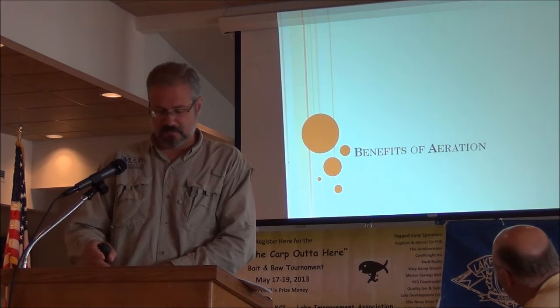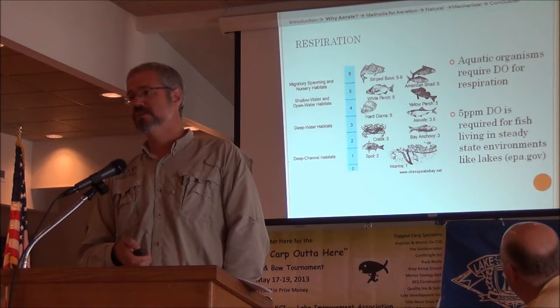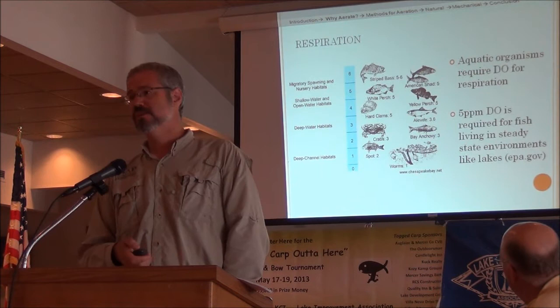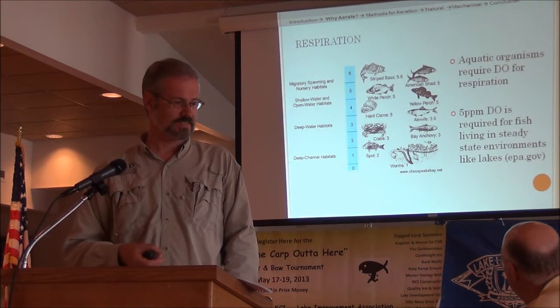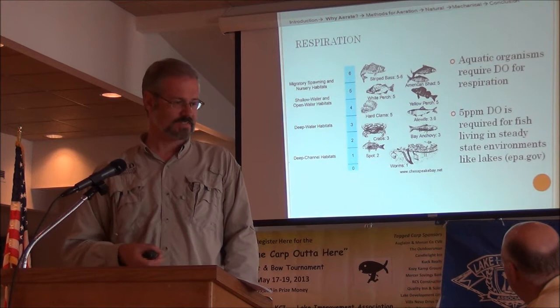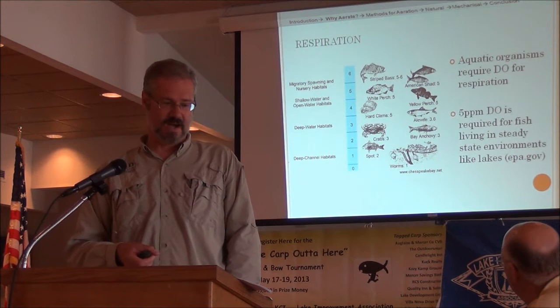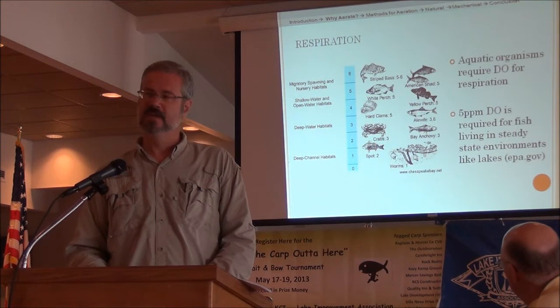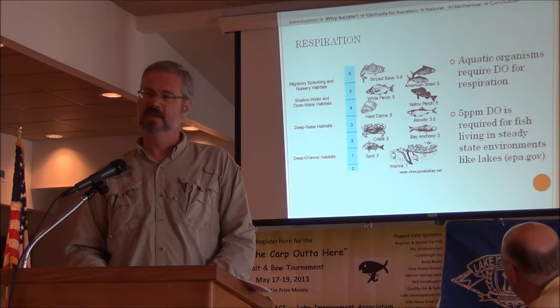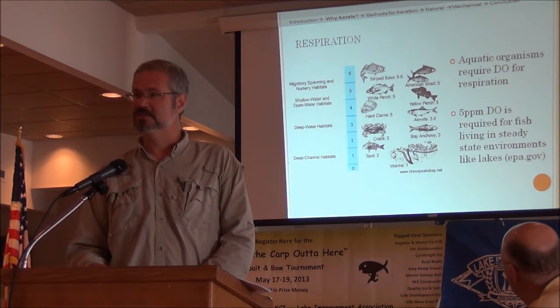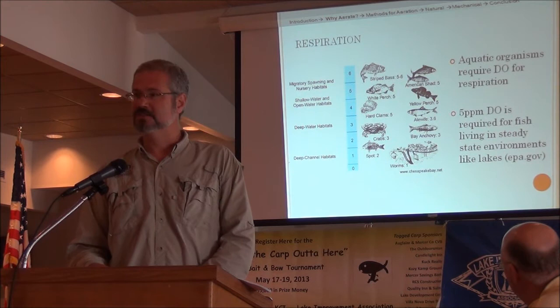When I talk about the benefits of aeration in all its forms — just having oxygen in the water — it's important for respiration. Living things in the water require a certain level of oxygen. Fish, insects, anything that survives in the water requires a certain amount, and five parts per million dissolved oxygen is sort of a general threshold for fish survival. There are some tough customers like carp that can withstand very low dissolved oxygen levels of one or two parts per million, but I don't think anybody wants a fish population entirely dominated by those very rugged, tough fish.